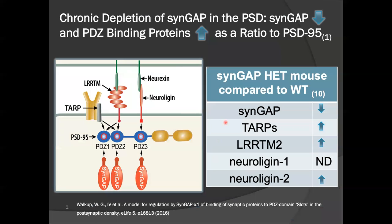To test this model, I looked at SYNGAP heterozygote mice. I took a sample set of six mice, each either wild-type or heterozygote, isolated the post-synaptic densities from those animals, and pooled them together. I looked at the abundance of SYNGAP and other targets as a ratio of PSD-95 — this ratio matters because I care about the abundance of these proteins relative to PSD-95, which they're binding to. In the heterozygote samples compared to wild-type, I saw a decrease in SYNGAP, which is exactly what I would expect. But I did see an increase in TARPs, LRRTM2s, and neuroligin-2s, which the model predicted. So this supports the model.